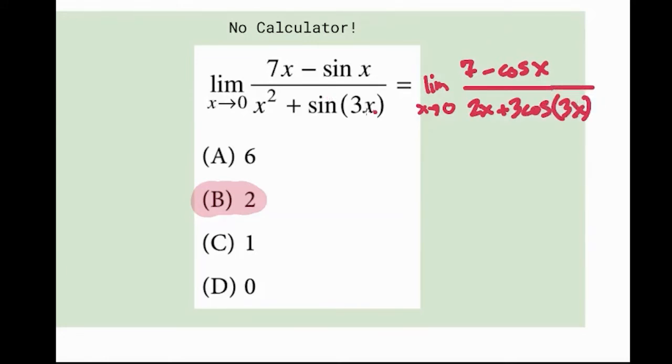If you do chain rule for this one, you have to do the outside layer first, which is the cosine, and then multiply by the inner derivative of 3X, which is 3. So it's 3 cosine 3X.